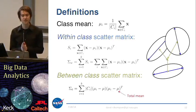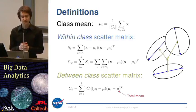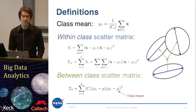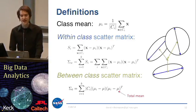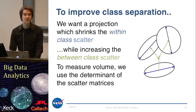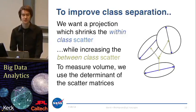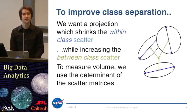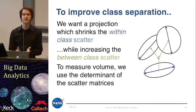We also define the between-class scatter matrix, which measures how well the different ellipses are separated from each other. We take the mean of the entire dataset, mu, and look at the difference between that and the mean of each class independently. This is represented in the image by the green arrows showing the separation of the different ellipsoids. So we have two measures of scatter: the within-class scatter and the between-class scatter. To improve the separation of the classes in our projected space, we want a projection that shrinks the within-class scatter — making class distributions as compact as possible — while increasing the between-class scatter so that classes are well-separated from each other. We measure the determinant of the scatter matrices, which you can think of as a measure of volume in high dimensions for these positive semi-definite matrices.